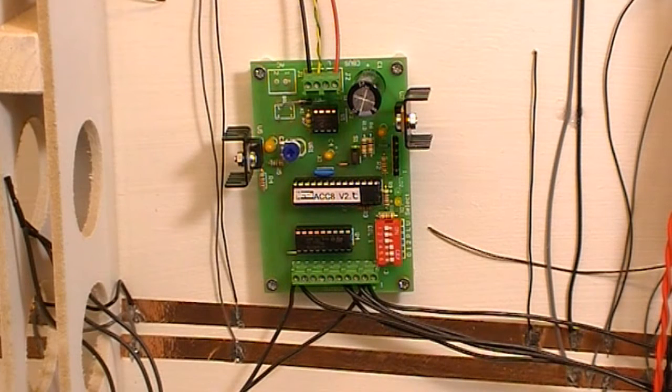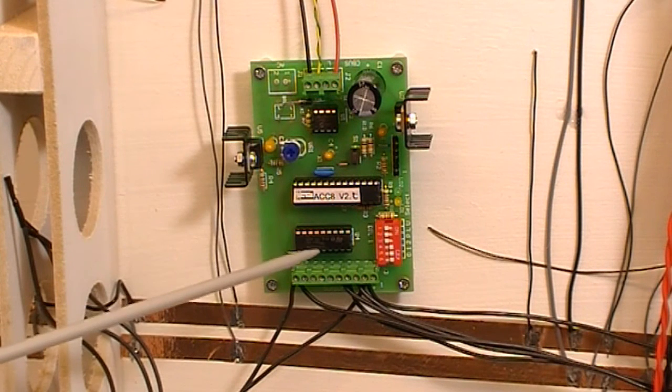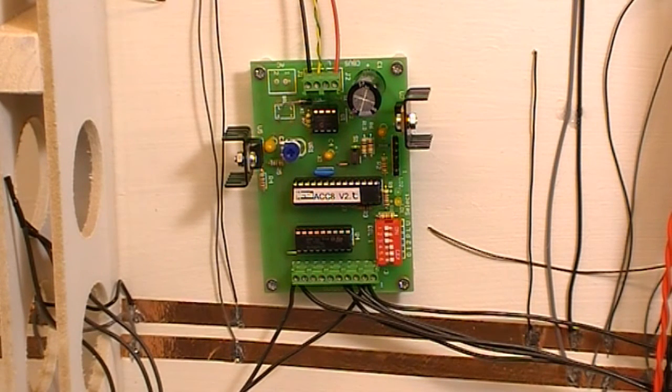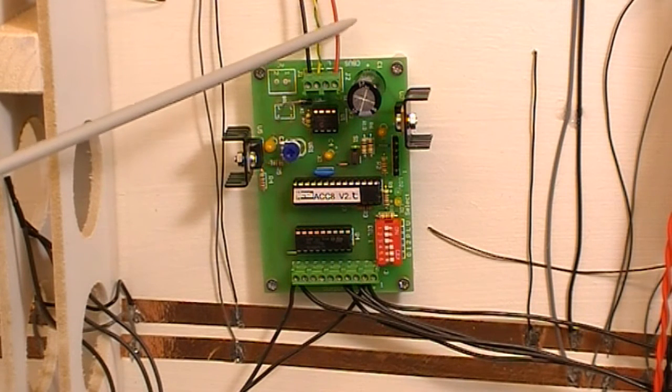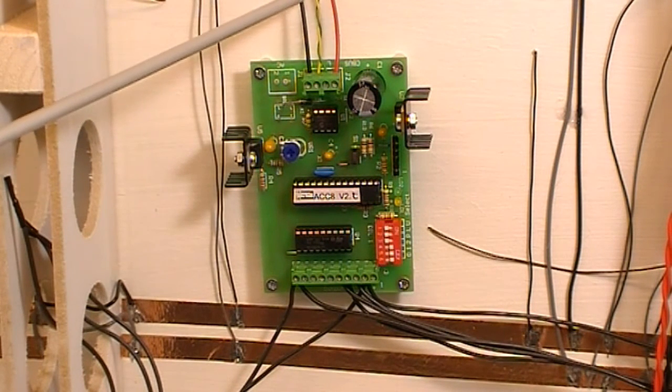This is the board that actually controls the servos. Again it has a microcontroller on it and an output buffer which is used to drive the servos. It connects to the CAN bus plus 12 volts on these two wires, and on the green and yellow the actual CAN bus is connected.